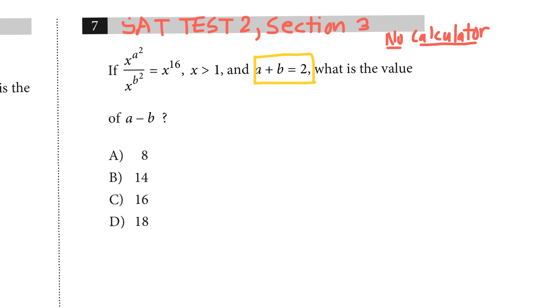The rules for exponents is that when you're dividing with the same base, you will have to subtract. So if I have x raised to the a squared power divided by x raised to the b squared power, then this would just be x equal to a squared minus b squared, and the answer here for this part is x to the 16th power.